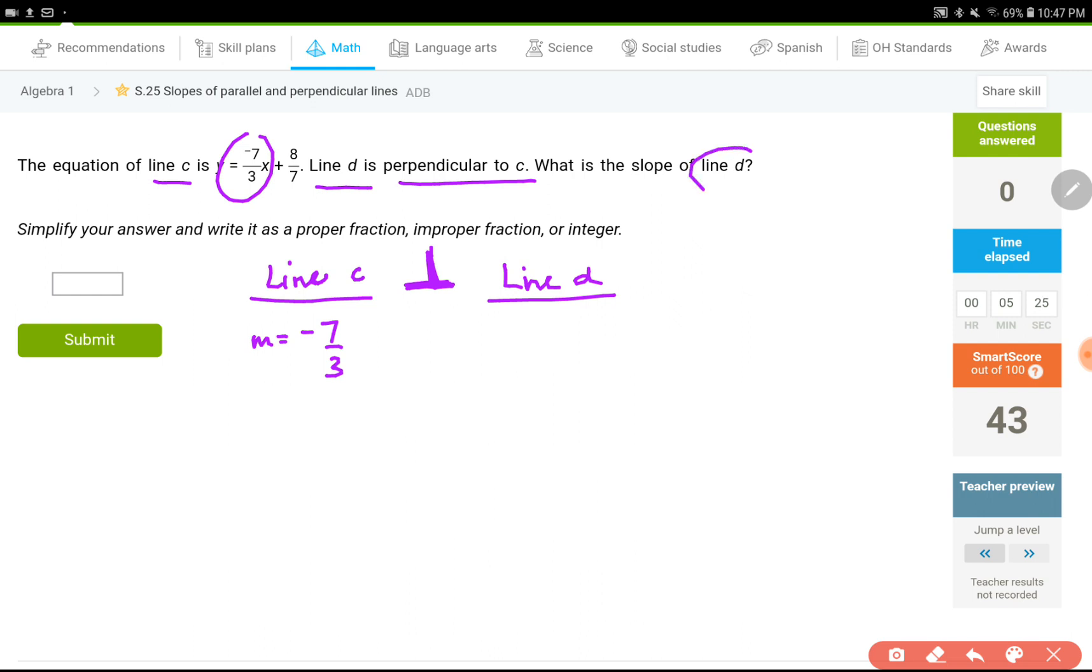So what is the slope of line D? If they are perpendicular, that means I need to flip the sign, turn it into positive, and flip the fraction, turn it into 3 over 7. So this would be my answer.